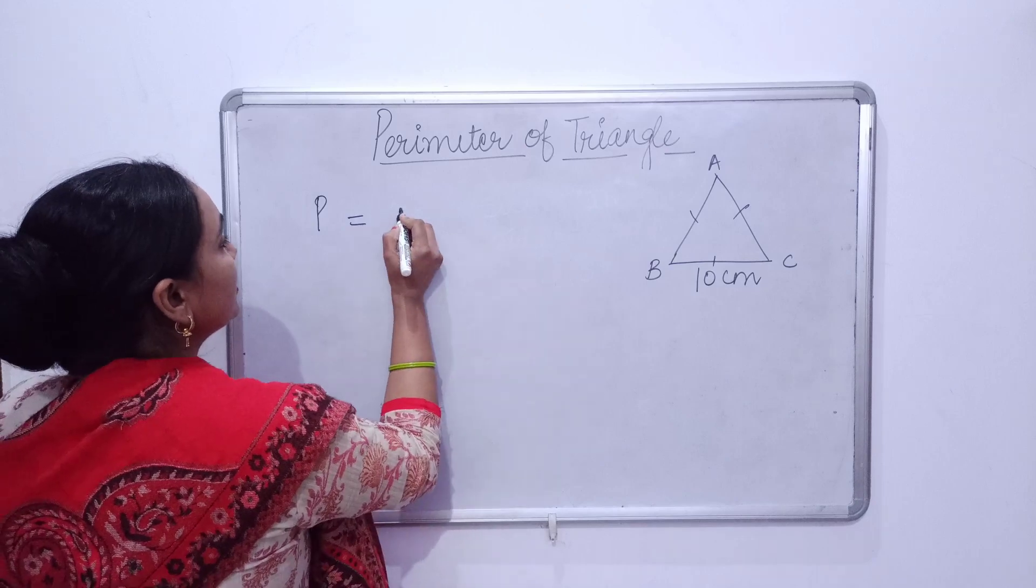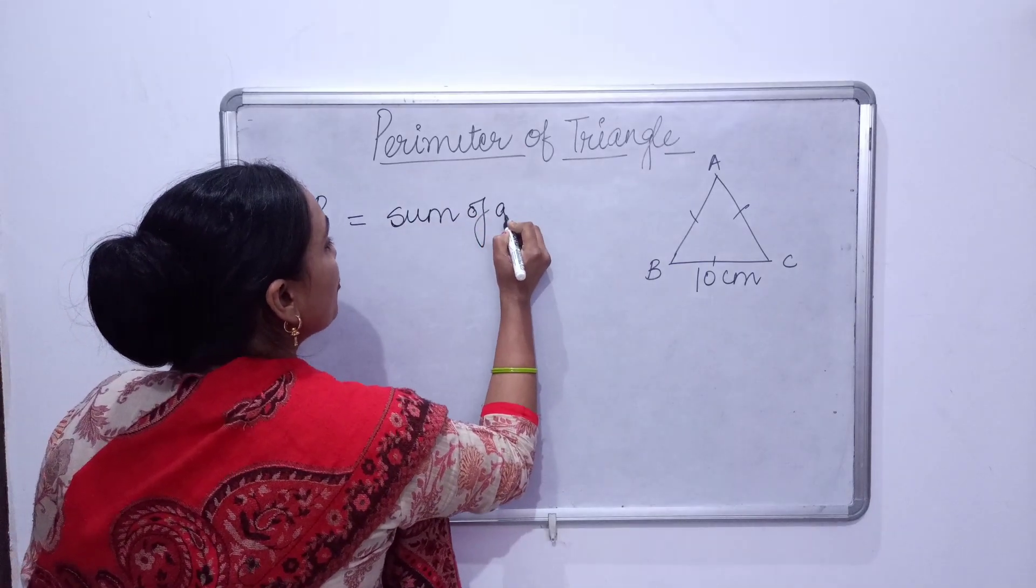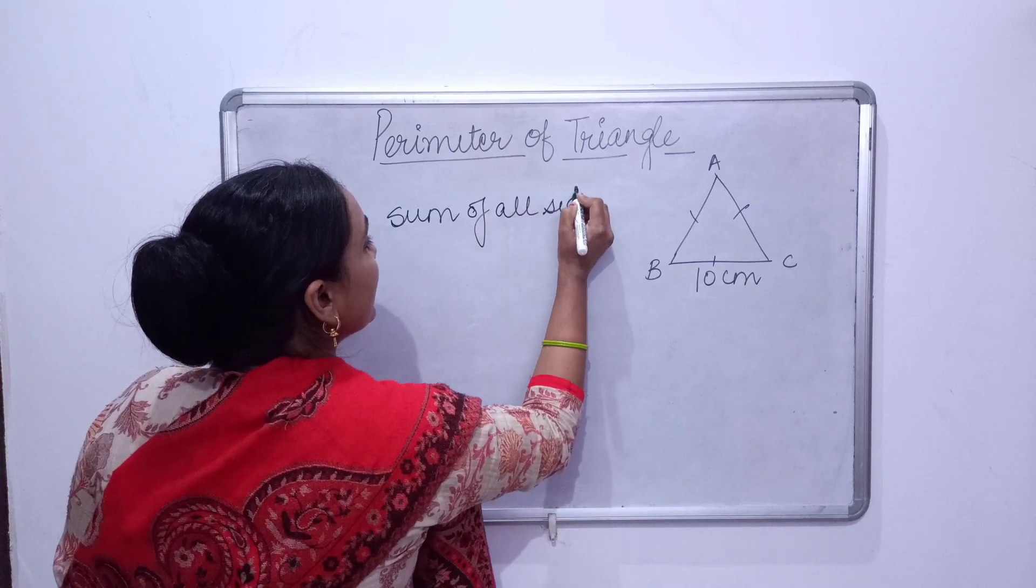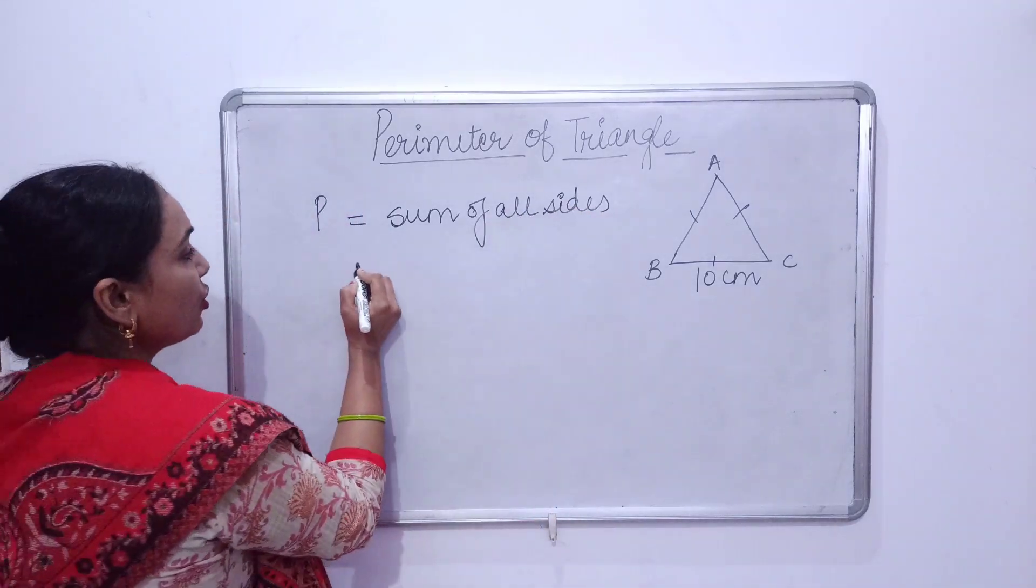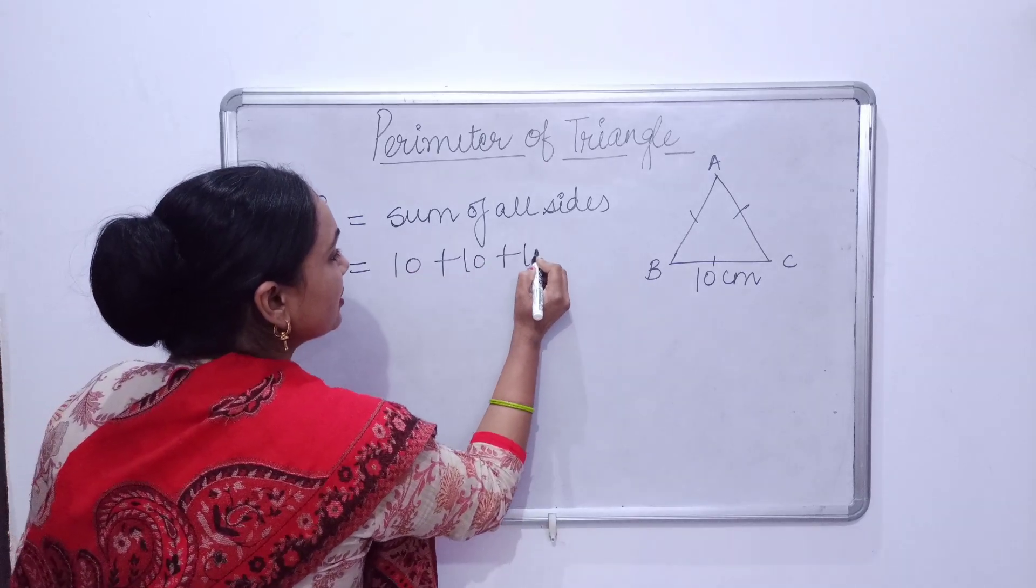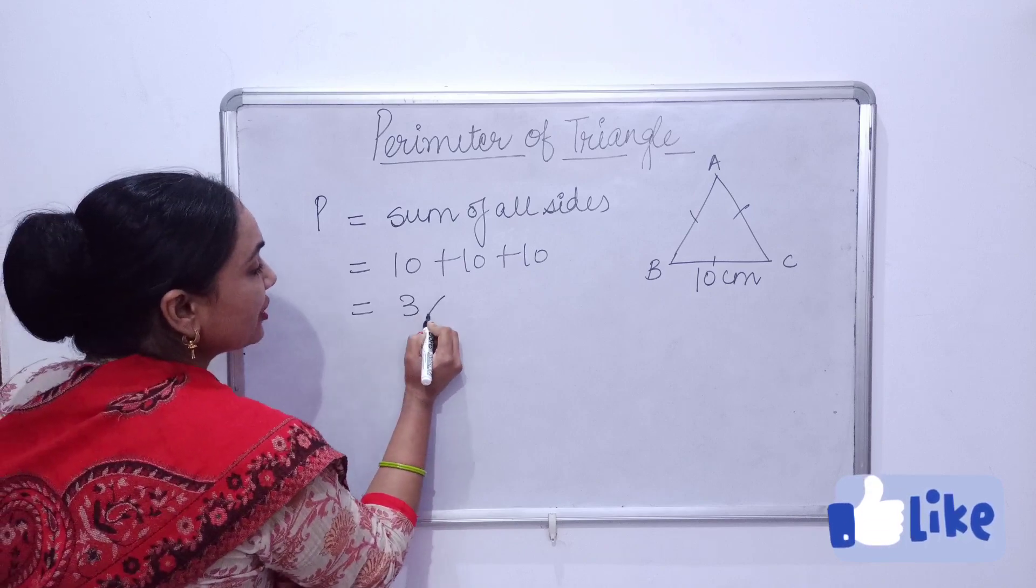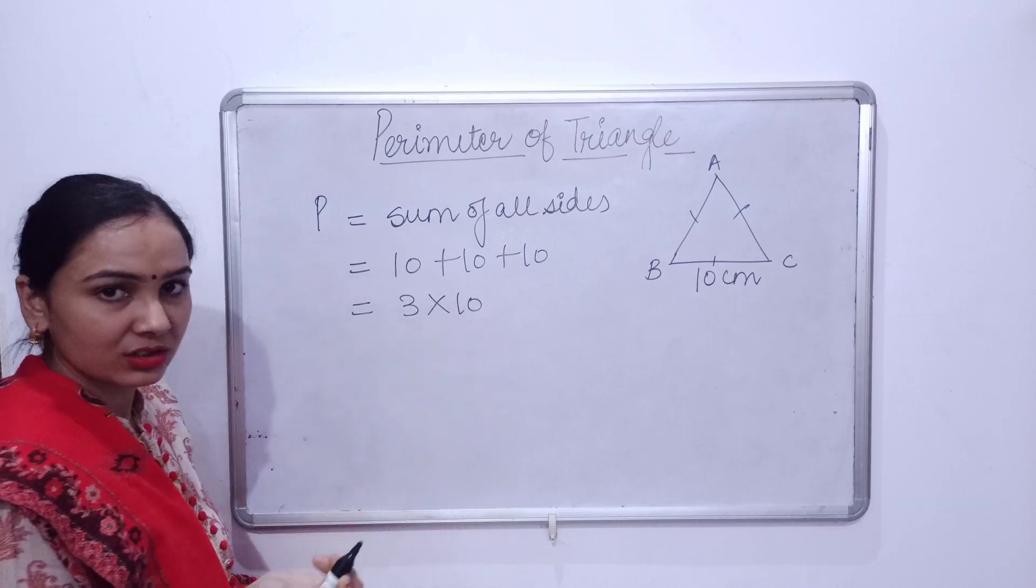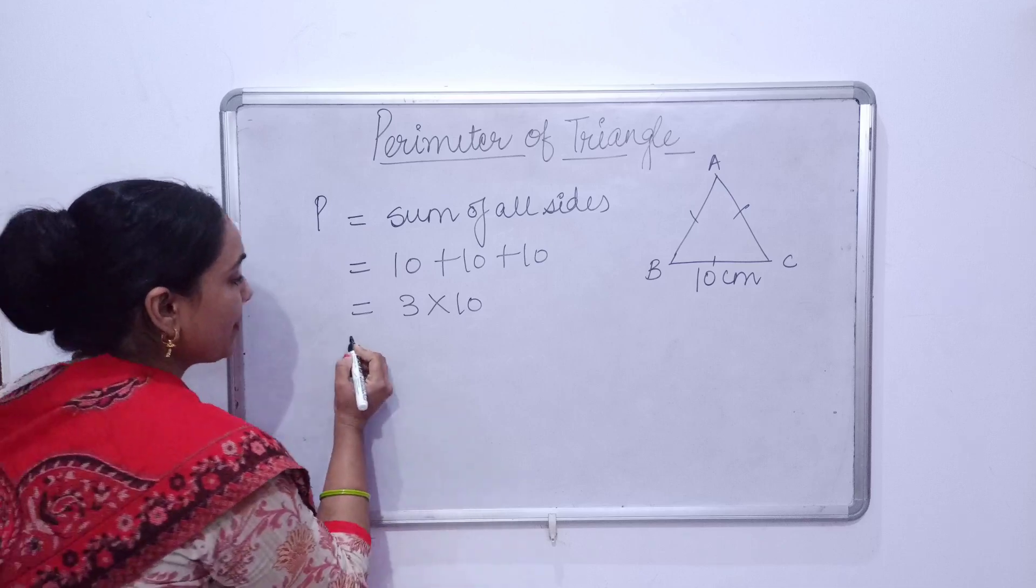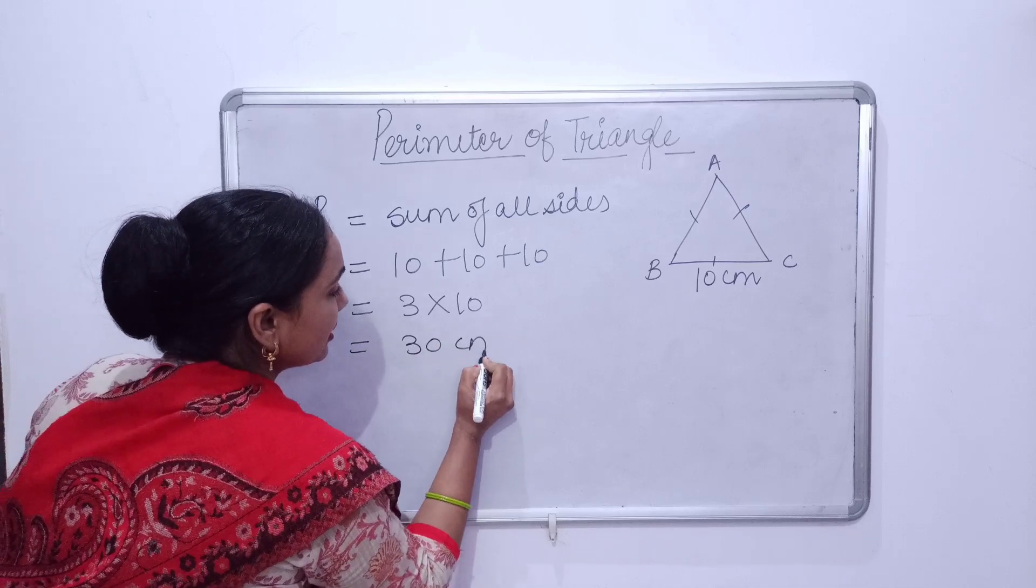Now let's find out the perimeter. P denotes the perimeter. See, perimeter is equal to sum of all sides, so we will add all the sides: 10 plus 10 plus 10.